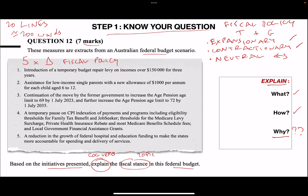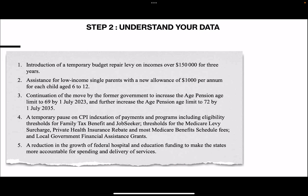So in this question, explain the fiscal stance in the Federal Budget based on these five data sets - this is all we know. Step two is understanding your data. This data has five items, and we've got to think about whether it's a change of G or T, and whether it's expansionary, contractionary, or neutral. Let's look through each of them.